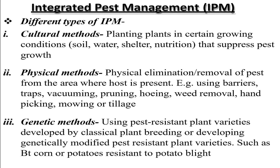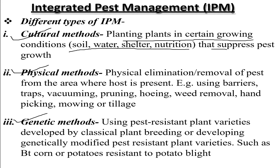There are different types of IPM. The cultural method involves planting crops in certain growing conditions — such as specific soil, water, and shelter conditions — that suppress pest growth, creating an environment not particularly conducive to pest formation.